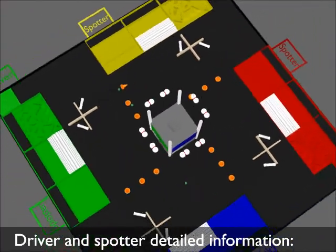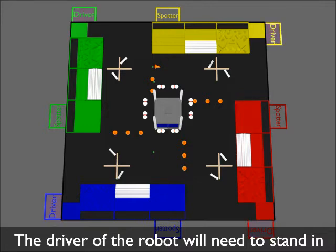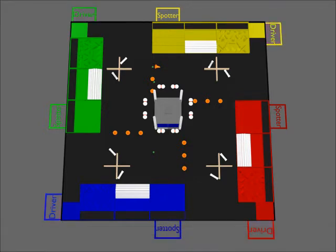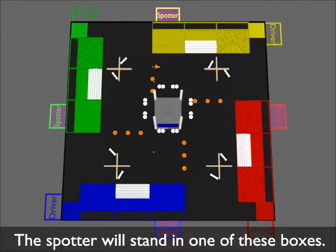Driver and spotter detailed information: The driver of the robot will need to stand in one of these boxes. The driver will be assisted by a spotter. The spotter will stand in one of these boxes.